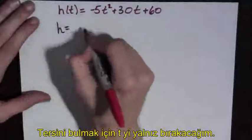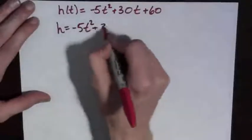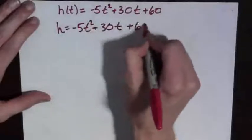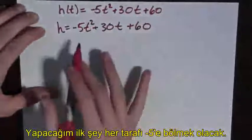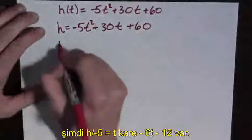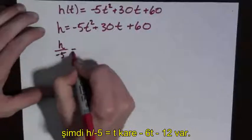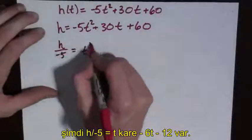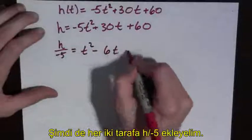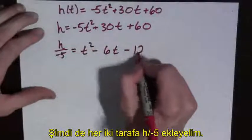we set h equal to minus 5t squared plus 30t plus 60. Now, the first thing I'm going to do is divide everything by negative 5. So I have h over minus 5 is equal to t squared minus 6t minus 12.